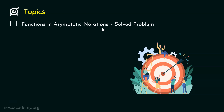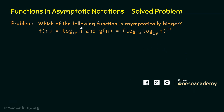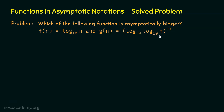Let's proceed and see the problem statement. Which of the following functions is asymptotically bigger? Out of these two functions, which one is asymptotically bigger than the other? f(n) is log n base 10, and g(n) is log(log n base 10) base 10, to the power 10.